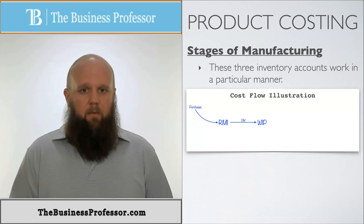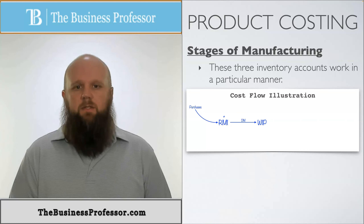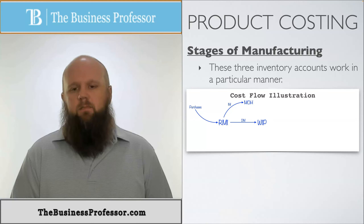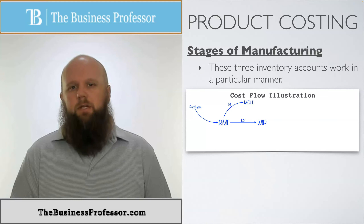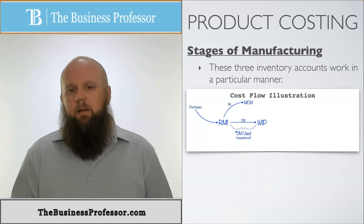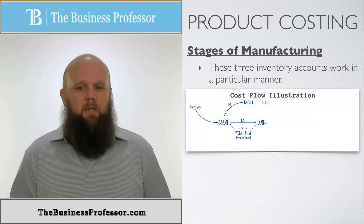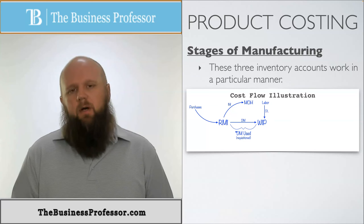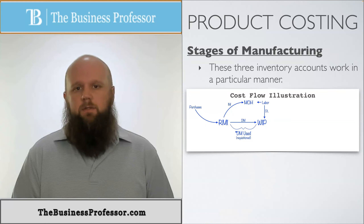The indirect material, however, doesn't go directly into work in process — it goes into manufacturing overhead. Manufacturing overhead is anything that goes into production that is not direct material or direct labor. In order to create the product, we also have to have labor. We split labor two ways: direct labor goes directly into work in process, and indirect labor also goes into manufacturing overhead.